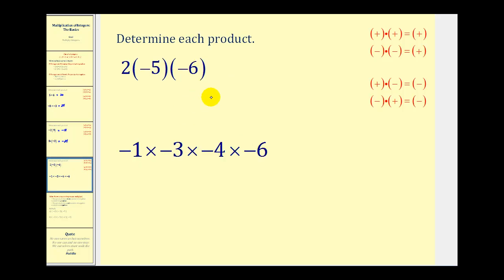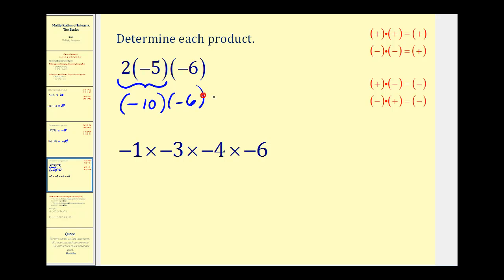Now let's take a look at what happens when we multiply more than two integers together. One way is just to follow these rules working your way from left to right. So here we have positive two times negative five — a positive times a negative is negative — so this would be negative ten times negative six. Now we have a negative times a negative, which is positive, so this would be positive sixty.